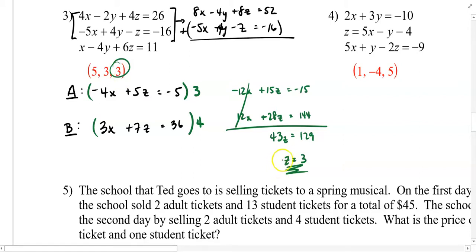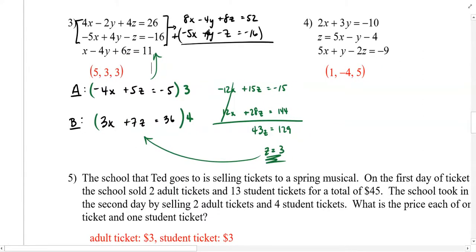From this point, we can back substitute, and I would take a z value of 3 into one of these expressions to solve for x. And then once I have x and z, I can back substitute into one of the originals and solve for y. I'll let you do that on your own, and you should see that your solution here comes out to be 5, 3, and 3.